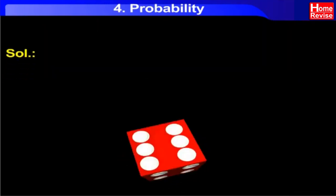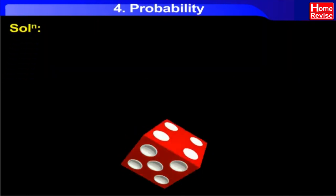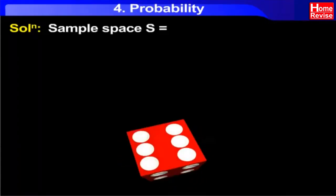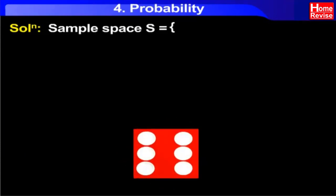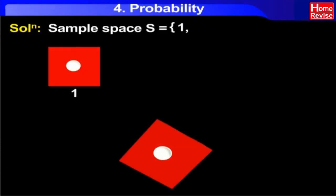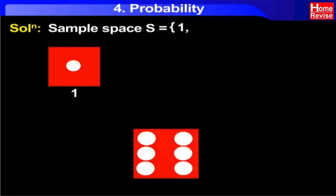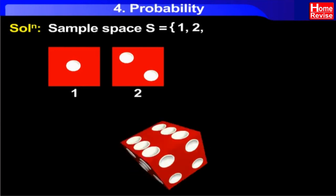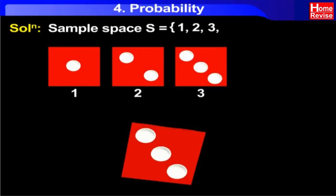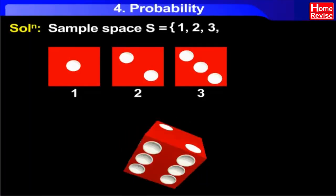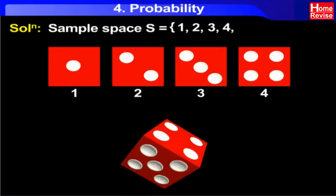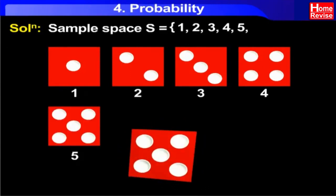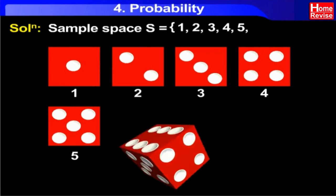Solution. When a die is thrown, sample space S is equal to { 1, 2, 3, 4, 5, 6 }.